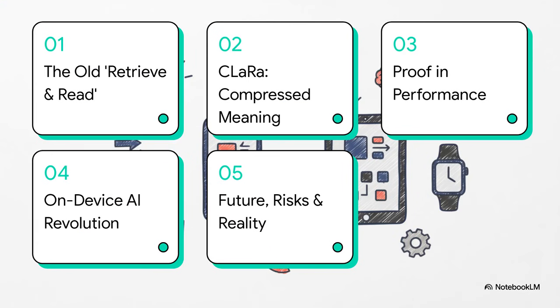So here's how we're going to break it all down. We'll start with this big context paradox and look at the old retrieve-and-read method. Then we'll see how Apple's Clara completely flips the script by compressing true meaning. After that, we'll look at the proof, the actual performance numbers, and talk about what this means for the on-device AI revolution. And finally, we'll get real about the future, the risks, and what comes next.